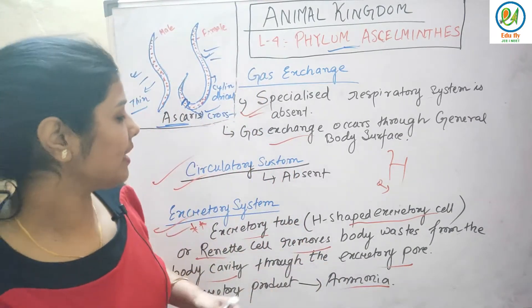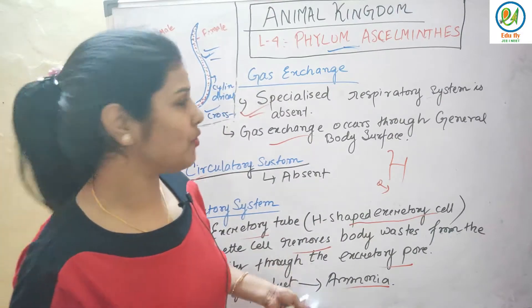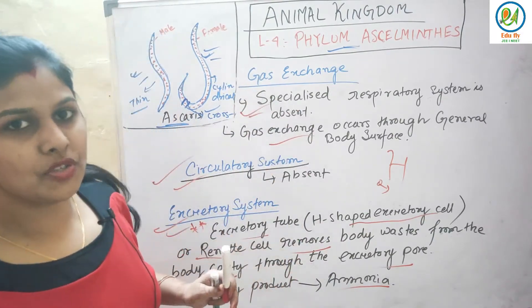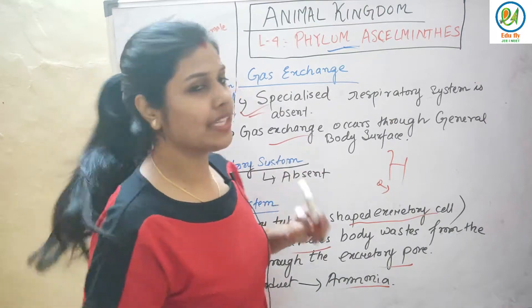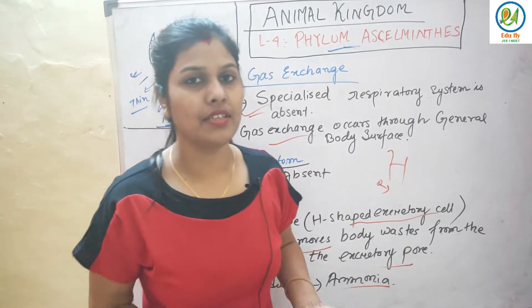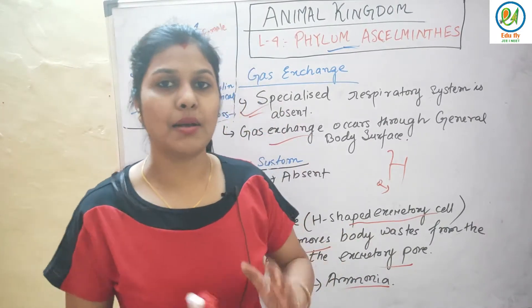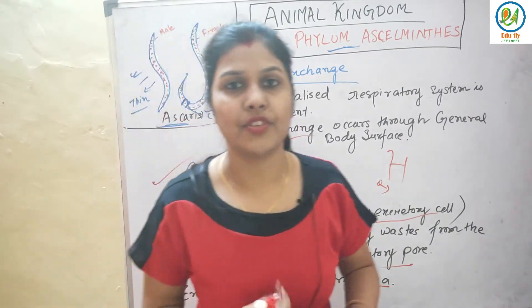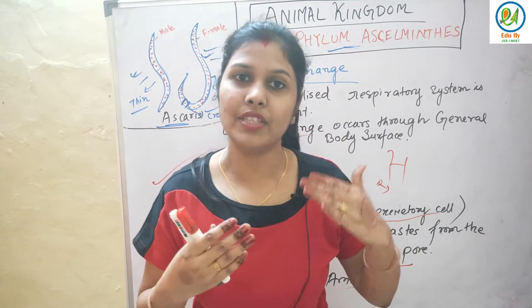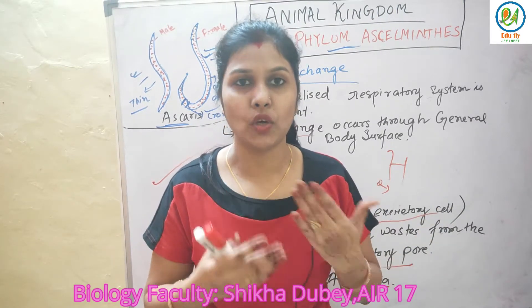The excretory product is ammonia, so they are ammonotelic organisms. The H-shaped excretory tube removes the excretory products. Just compare and study alongside the previous phylum — it will make your work easier.